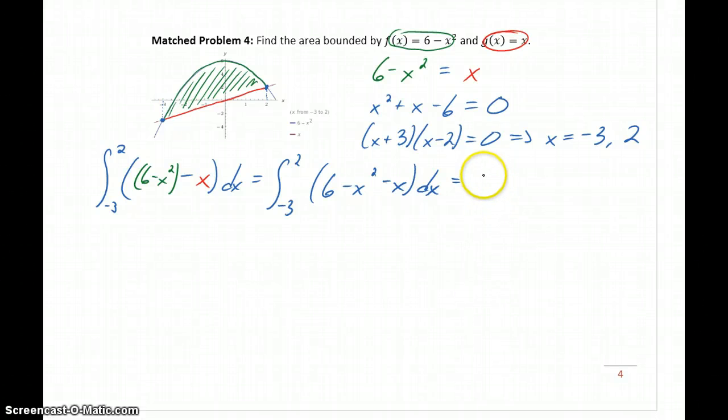Integrating this gives us 6x - x³/3 - x²/2, which then we want to evaluate from x = -3 to x = 2.